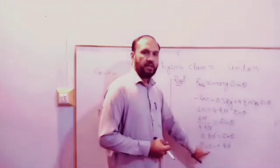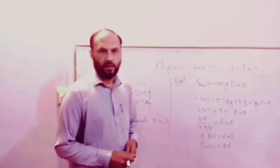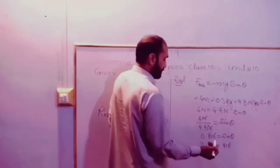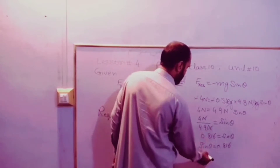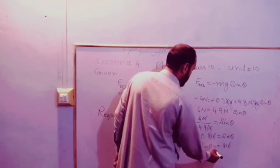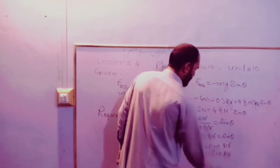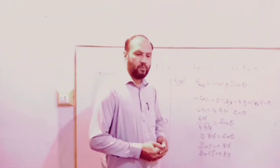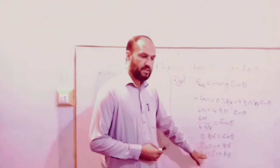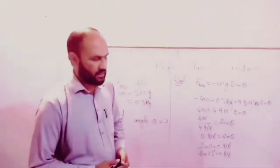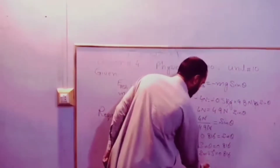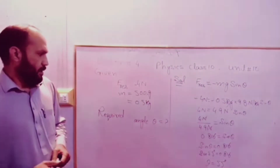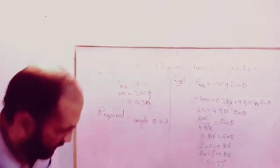The same angle: sin theta equals 0.816. Looking at the table, the sine value is 0.816, and that corresponds to approximately 55 degrees. The angle is the same as the average value of 55 degrees. The scientific calculator reads the same thing.